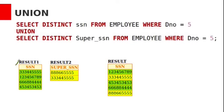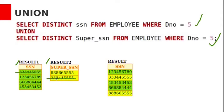The first query result has four employees working in department number 5, and these are their SSN values. The second query result has two employees who are supervisors for those four employees. In the union operation, we include all rows from both results, but duplicates are not allowed. One SSN value appears in both tables, so it is included only once, and the remaining rows from the second relation are also included.